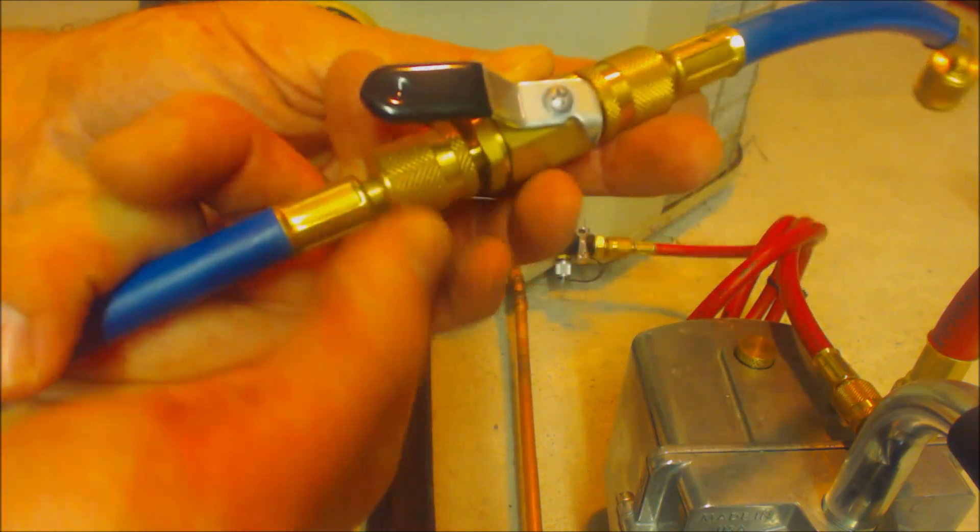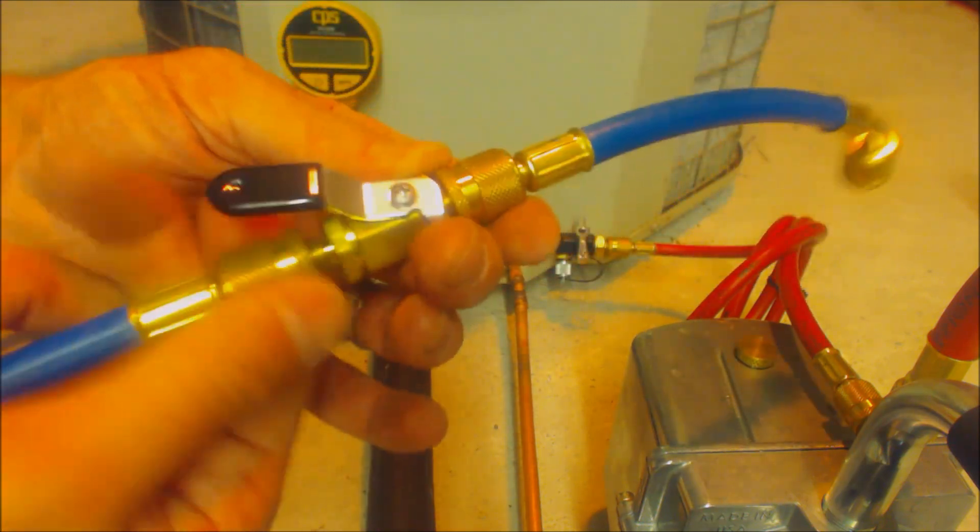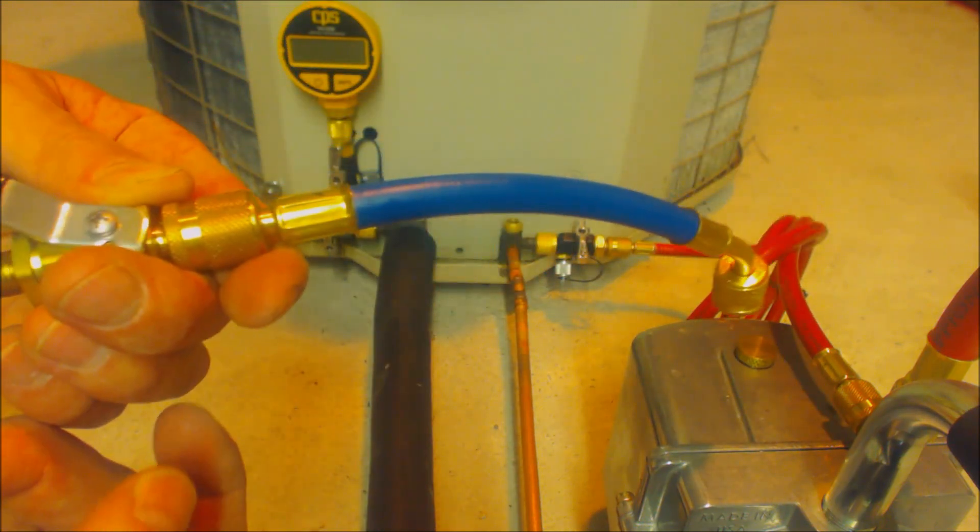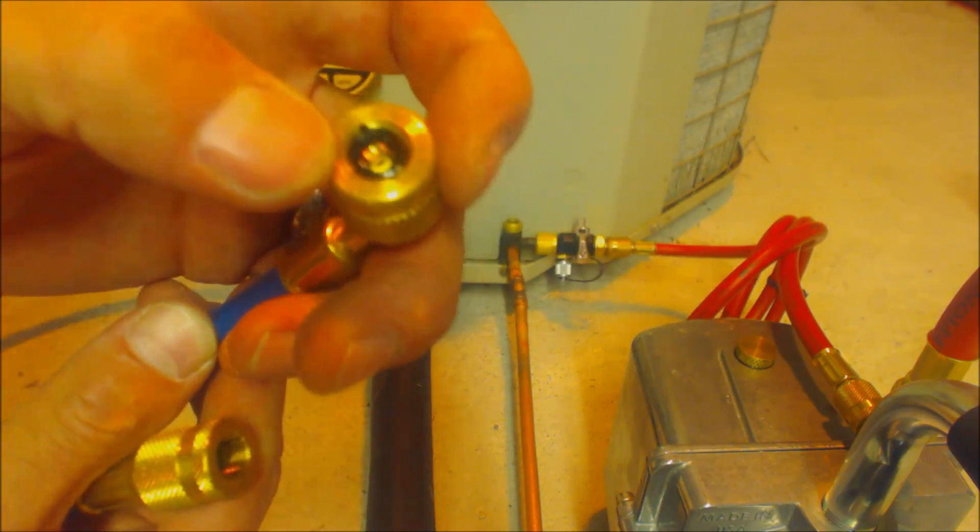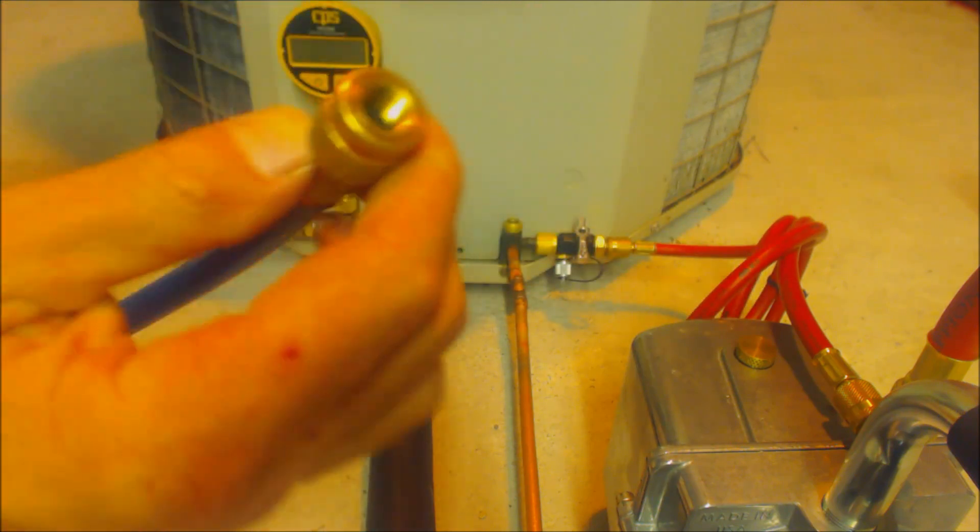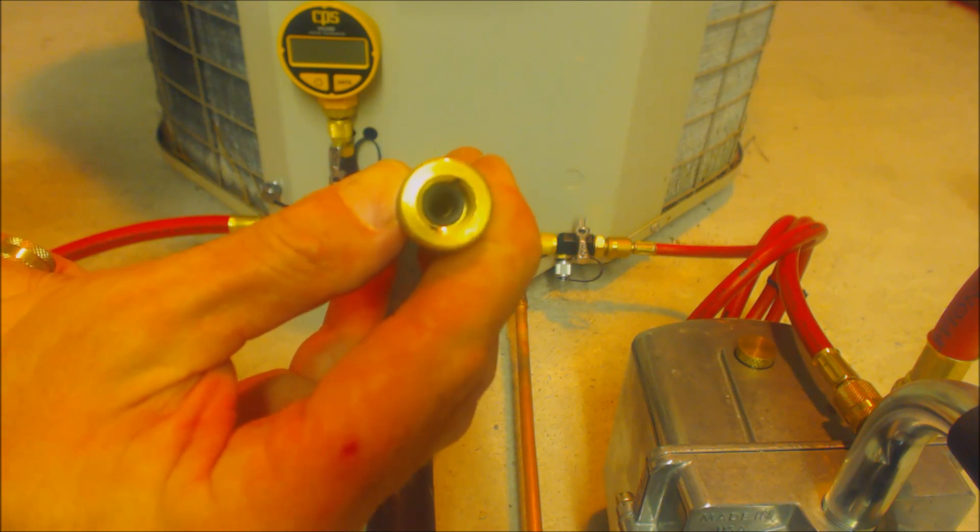If you have a setup like this, it's best to typically take all the extra pieces off, especially where you have that valve core depressor, and then you can just use the hose without the valve core depressor.